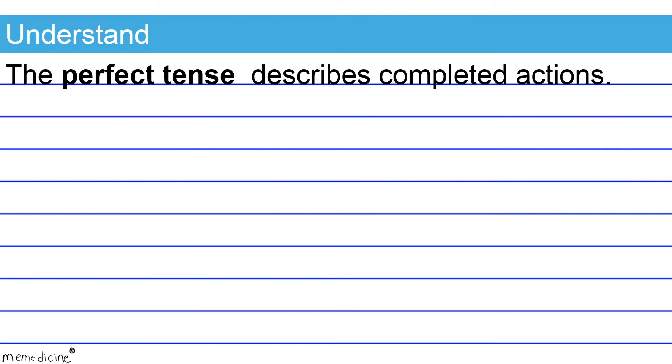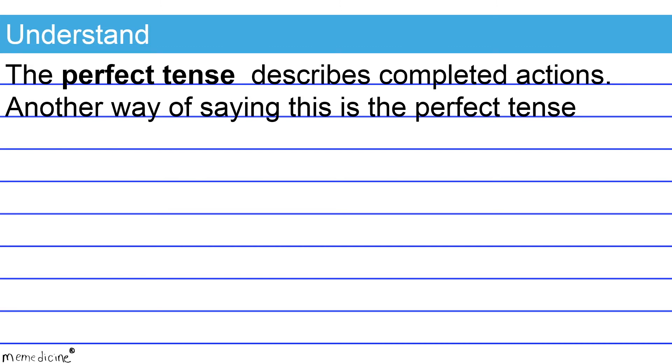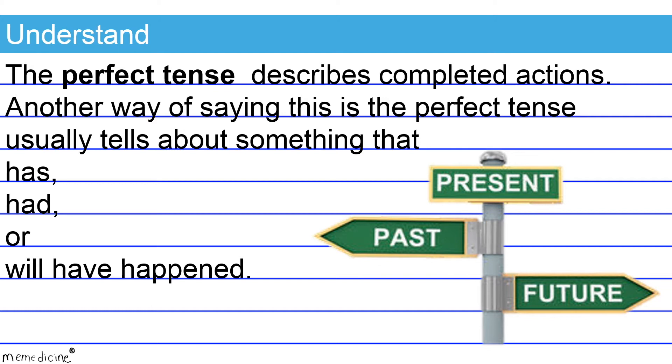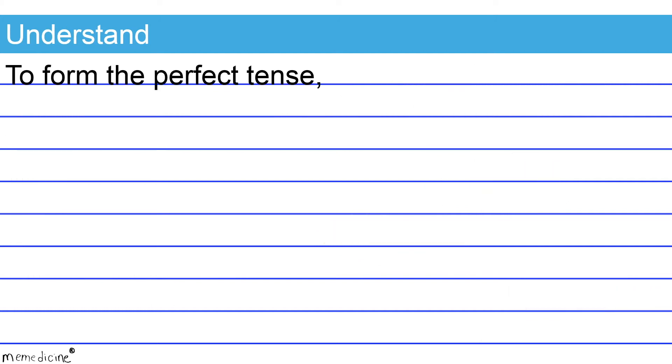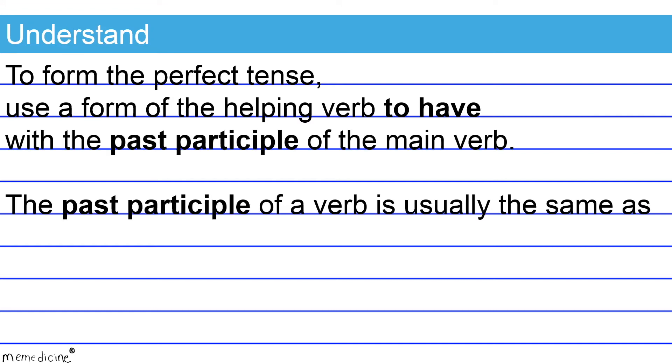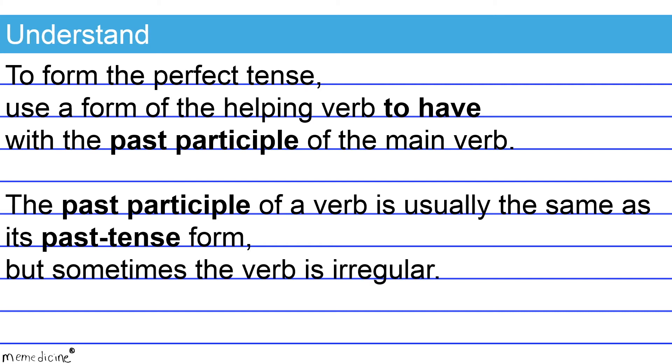The perfect tense describes completed actions. Another way of saying this is the perfect tense usually tells about something that has, had, or will have happened. To form the perfect tense, use a form of the helping verb to have with the past participle of the main verb. The past participle of a verb is usually the same as its past tense form, its simple past tense form, that is. But sometimes the verb is irregular.